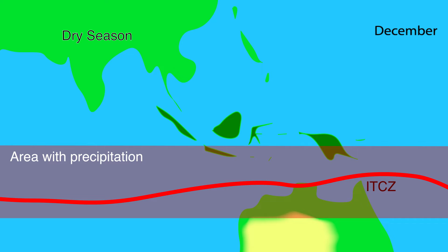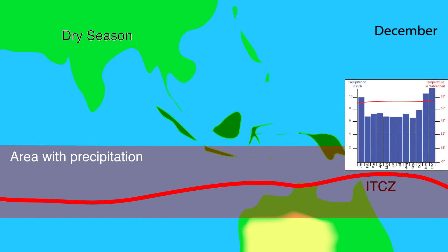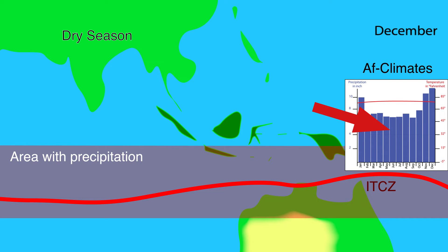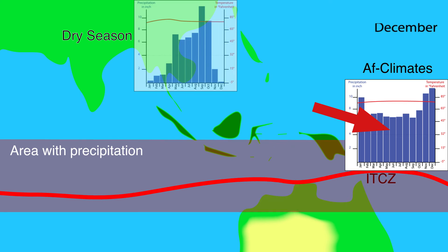Because of the movement of the ITCZ, rain and dry seasons exist. The equator will almost always be influenced by the ITCZ, causing it to rain. So at the equator there will be no dry season. According to the Köppen climate system, these are AF climates — warm and moist.